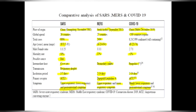A comparative analysis of SARS, MERS, and COVID-19: SARS originated in Guangdong, China in November 2002; MERS in Saudi Arabia in September 2012; COVID-19 in Hubei province, China in December 2019. SARS affected 26 countries, MERS affected 27 countries, and COVID-19 affected more than 200 countries. Total cases: SARS ~8,000; MERS ~2,500; COVID-19 in the millions. Age affected: SARS average 39 years; MERS 56 years; COVID-19 average 49 years. Mortality rate: SARS ~10%, MERS ~37%, COVID-19 ~3%.